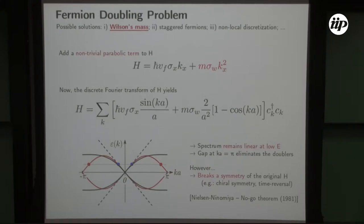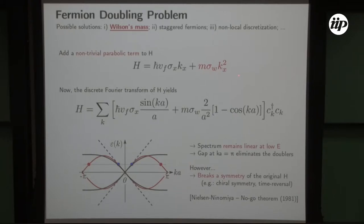The issue is that adding this quadratic term might break a symmetry. What K-squared corrections are allowed by symmetry? In high-energy physics there is no way to add a parabolic term without breaking a symmetry — this is the no-go theorem from Nielsen and Ninomiya. While the Wilson mass solves the problem in high-energy physics, it breaks a symmetry and can give incorrect solutions. But in solid-state physics we can add this term — we just have to do it carefully and respect the symmetries.